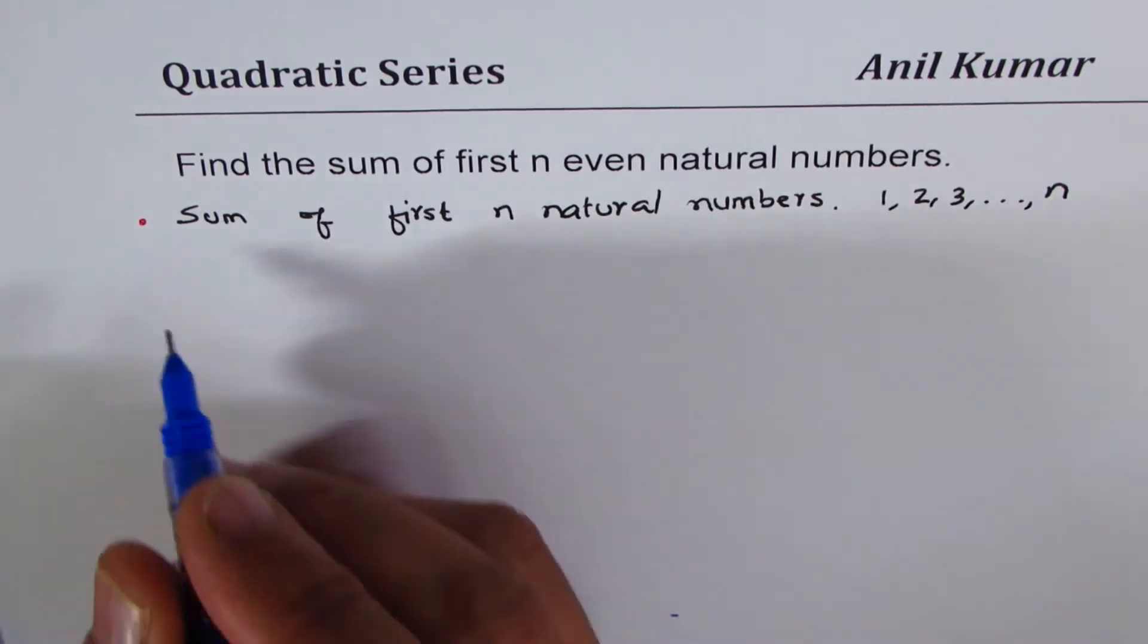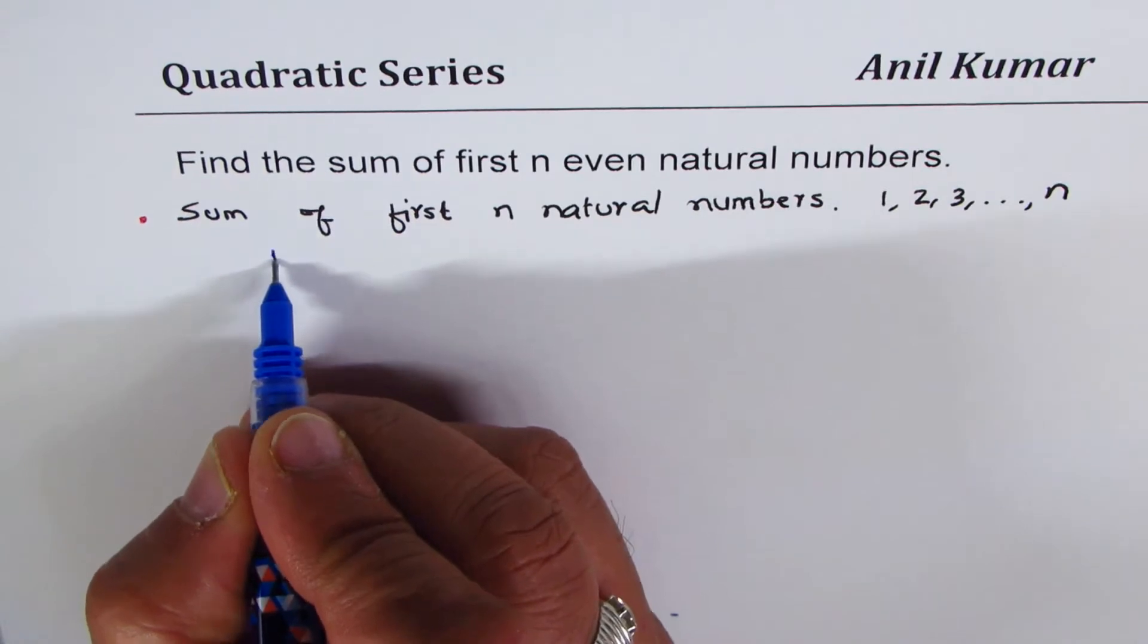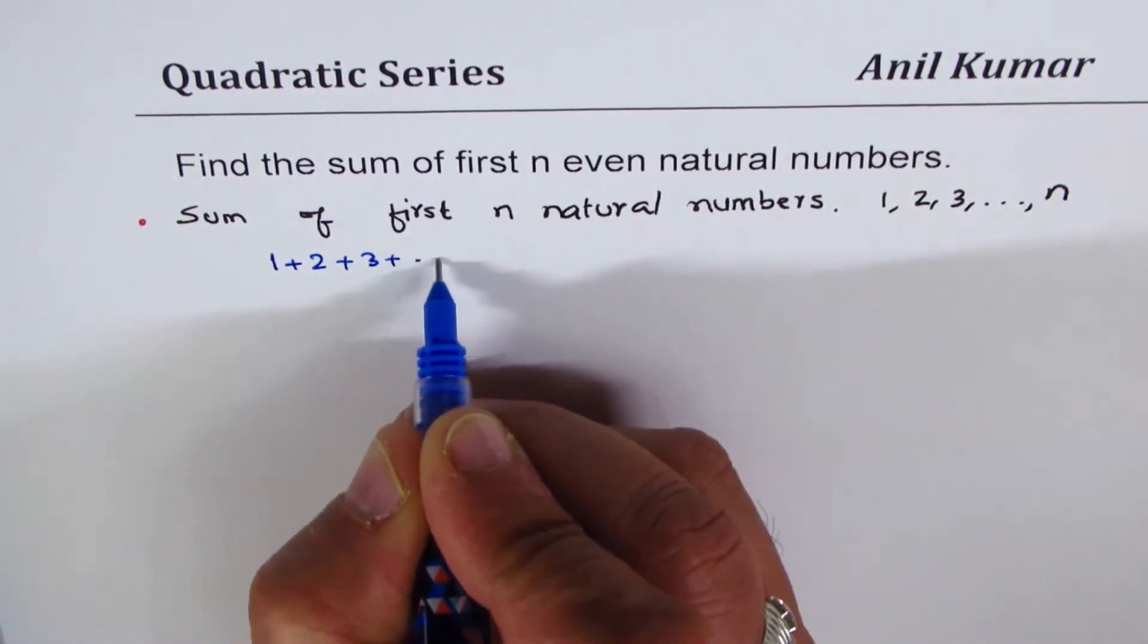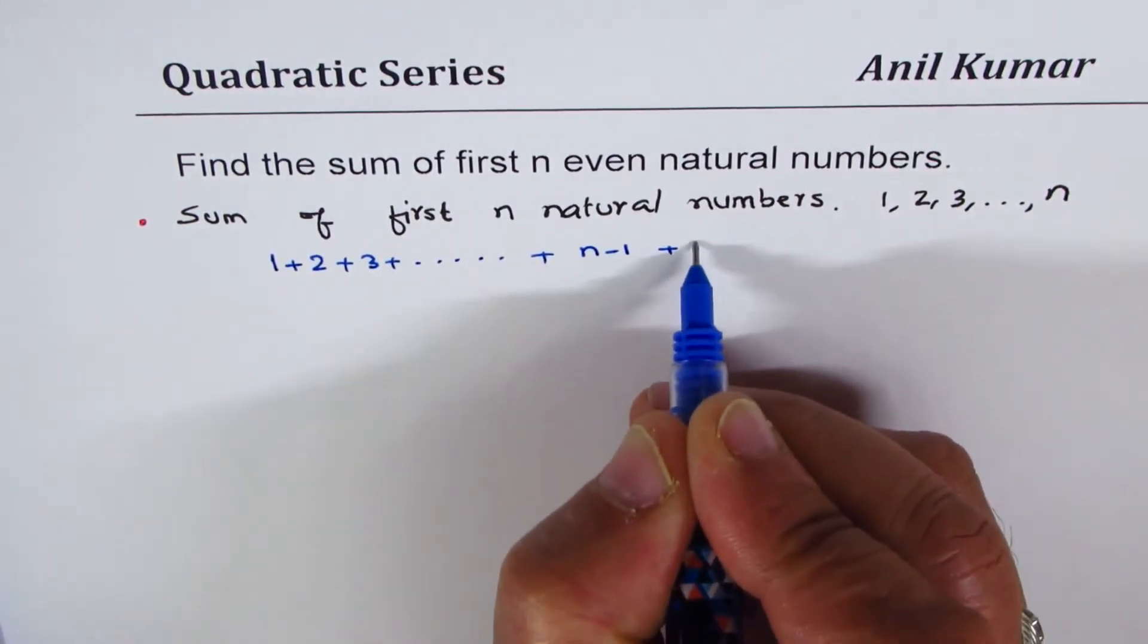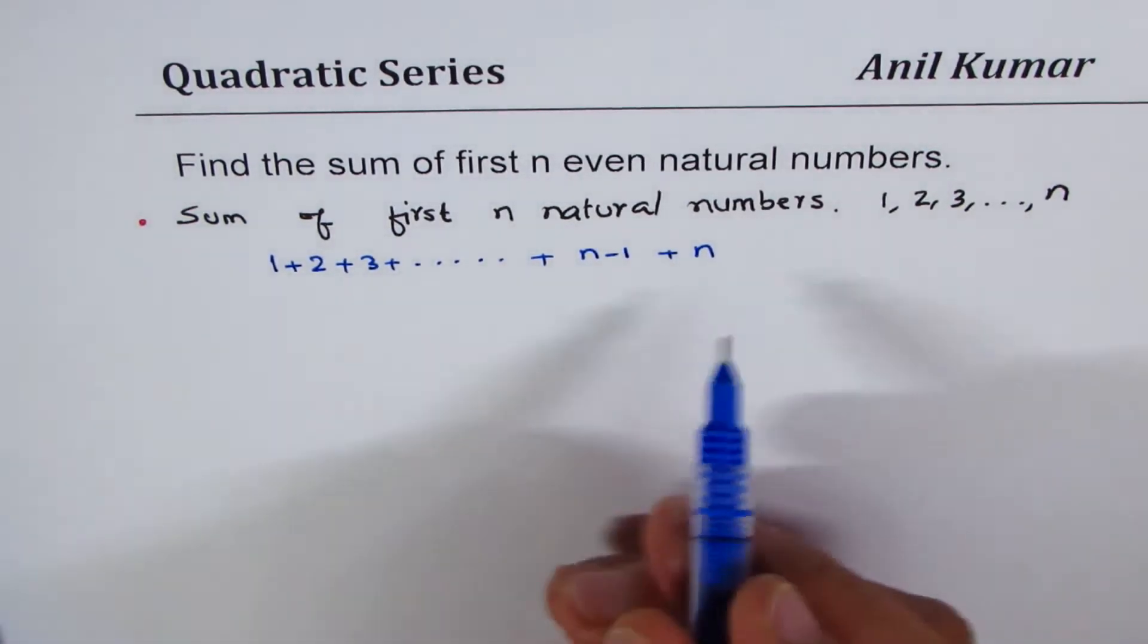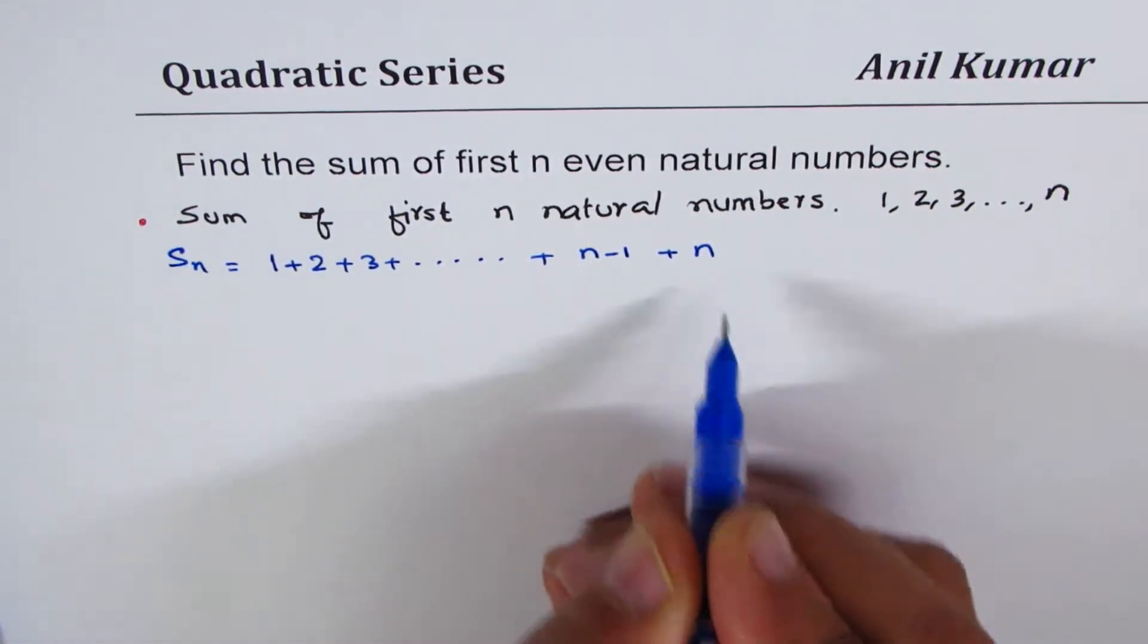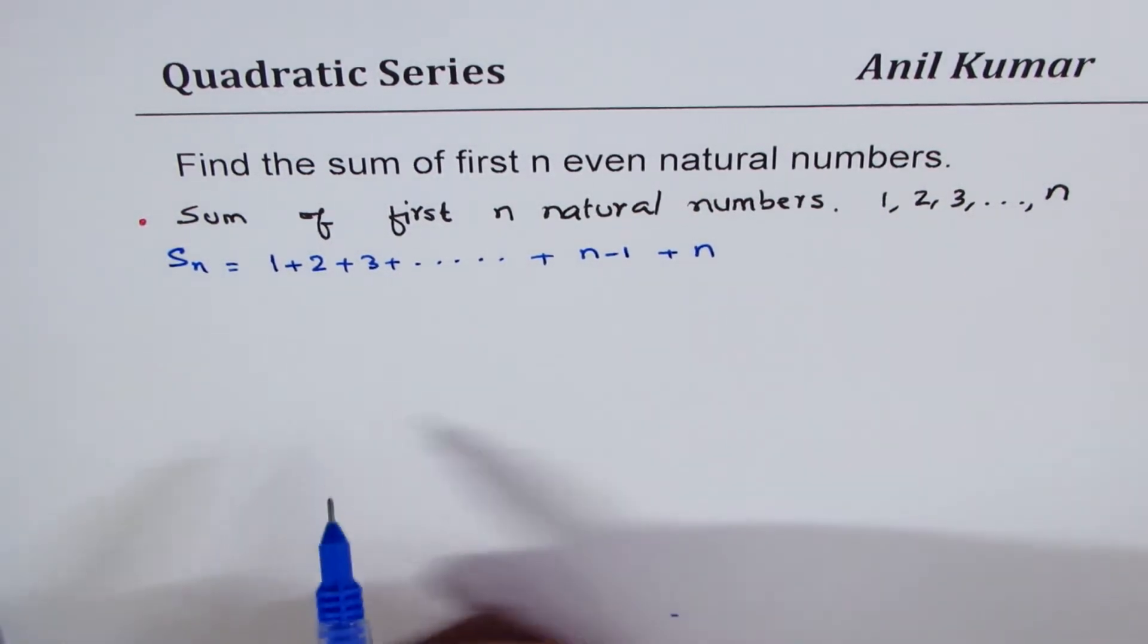The method to do is very simple. We'll just write down this series. We say one plus two plus three plus so on. Let's say we have n minus one plus n. So, that becomes the last term. We want to find sum of all this. And let us say Sn is sum of n natural numbers. So, s for sum, n for n natural numbers.